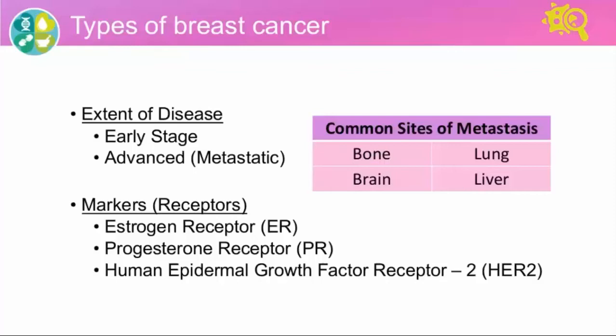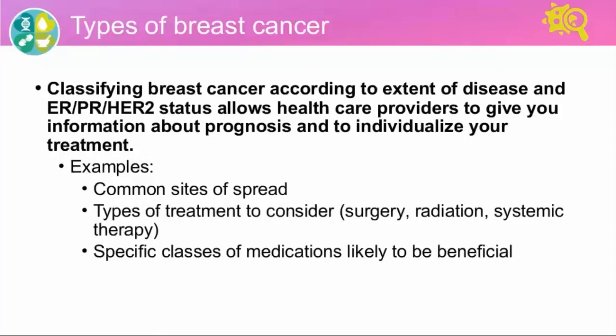Those are the breast cancer cells that are considered to be HER2 positive. If a breast cancer does not have any of these markers — no estrogen receptor, no progesterone receptor, and no HER2 — that would be called triple negative breast cancer. Breast cancers positive for one or both of the hormone receptors are considered hormone receptor positive, and we can also have breast cancers that are both hormone receptor positive and HER2 positive.